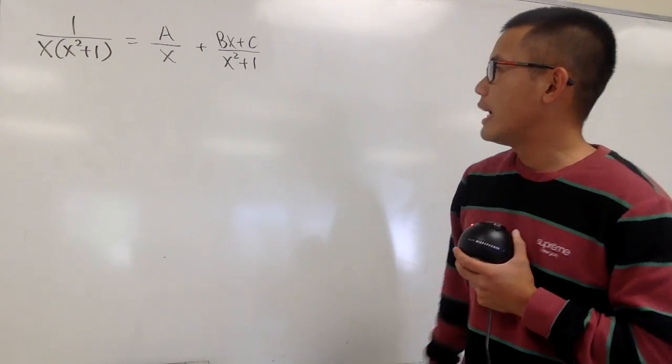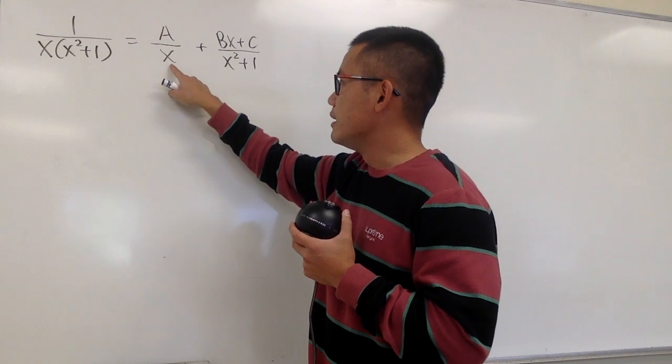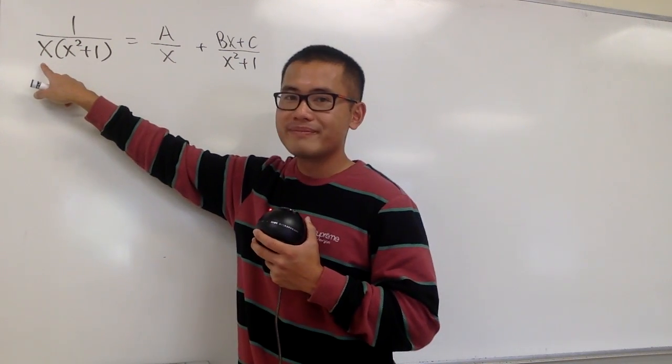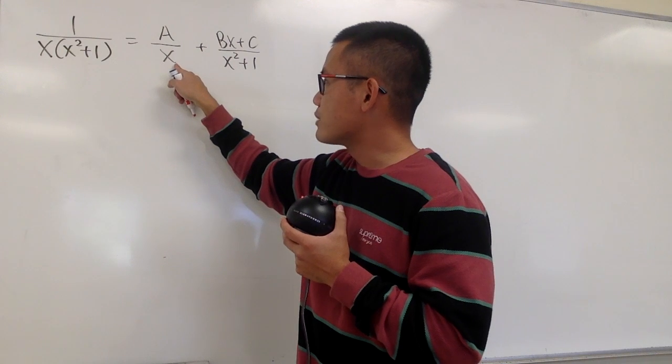And now, I'm going to use the cover-up method to figure out what a is, because the denominator here is the same as that one. And to do the cover-up, what I'm going to do is, since we have the x right here,